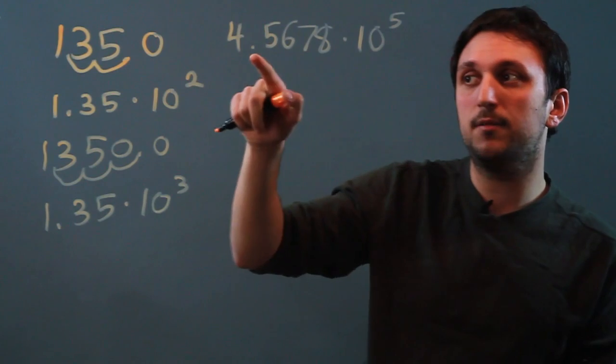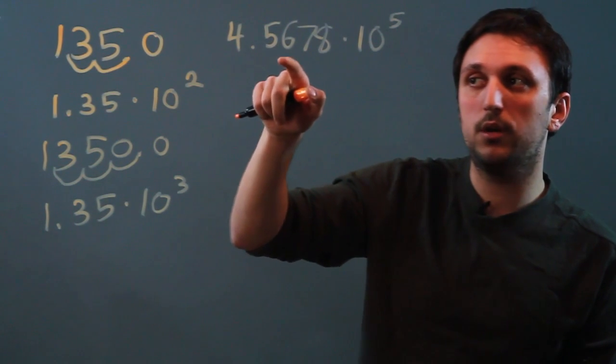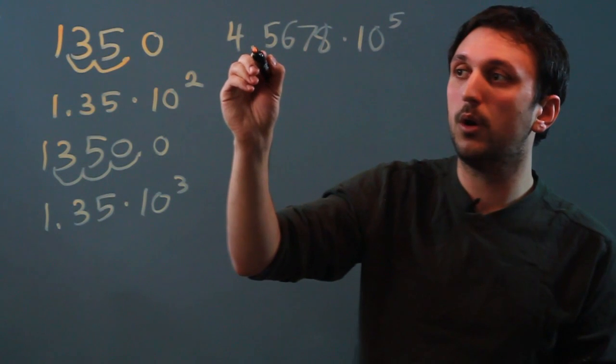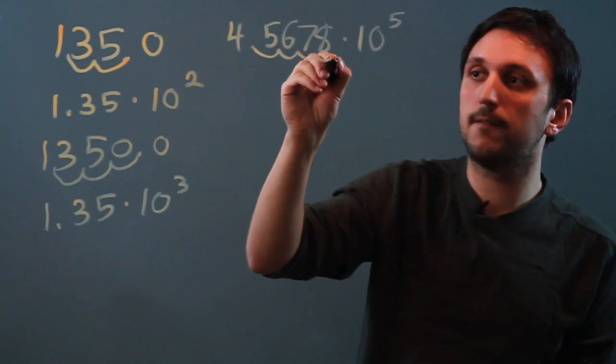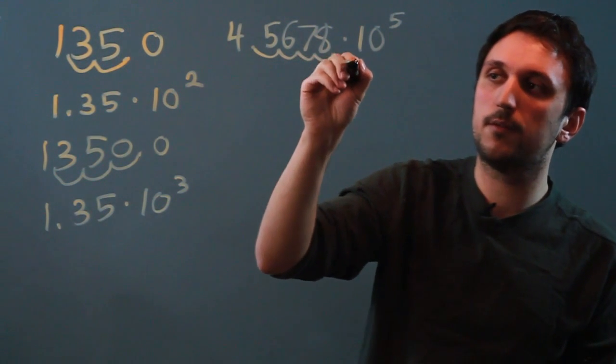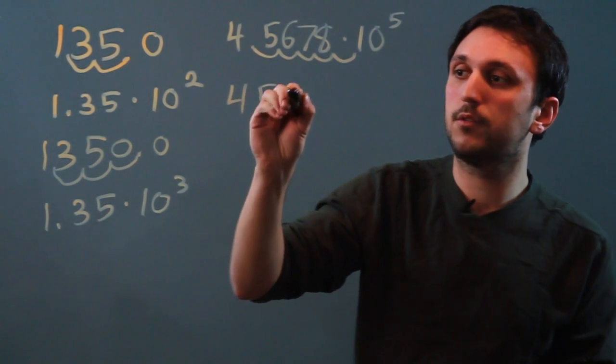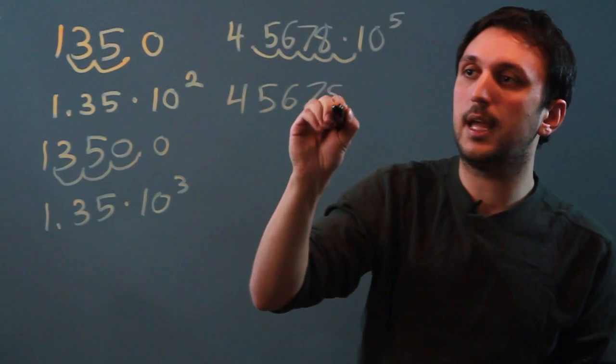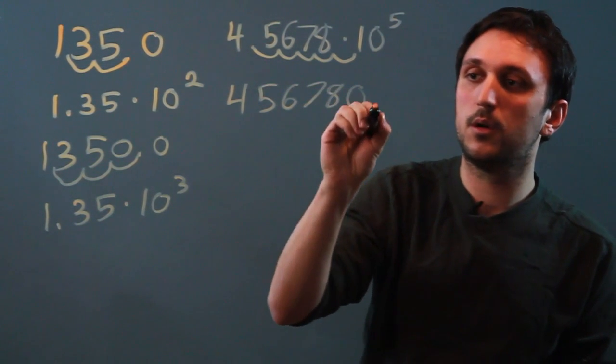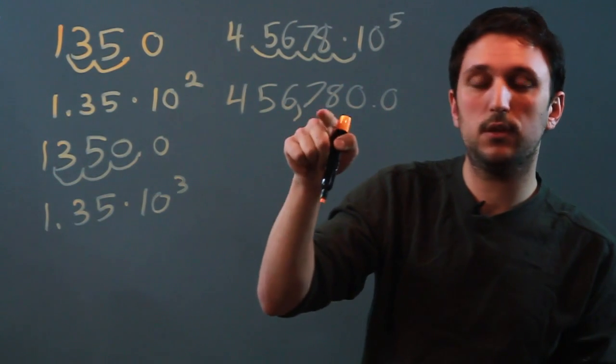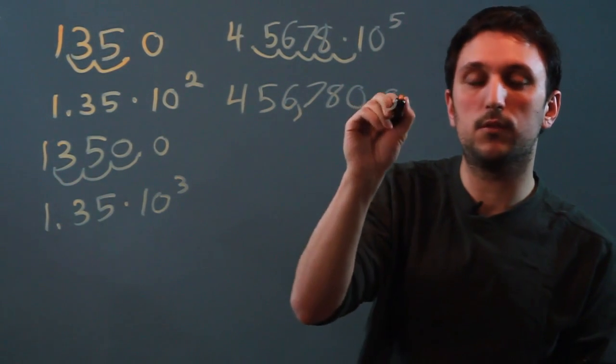okay, this 5 means this decimal place has to go five places to the right: 1, 2, 3, 4, 5. But there's no more numbers after the 8, so we add zeros. So we get 4, 5, 6, 7, 8, 0, 0, which gives us 456,780.0.